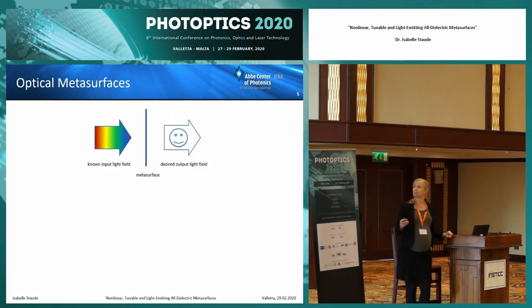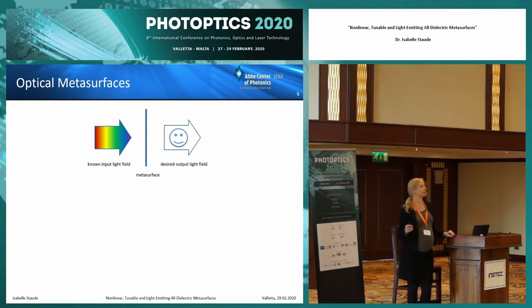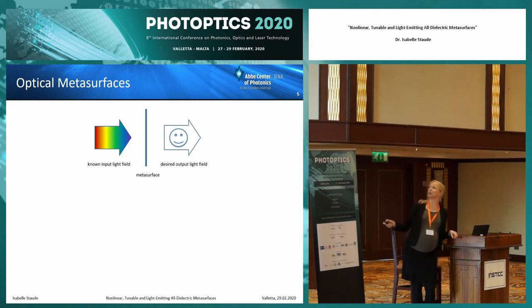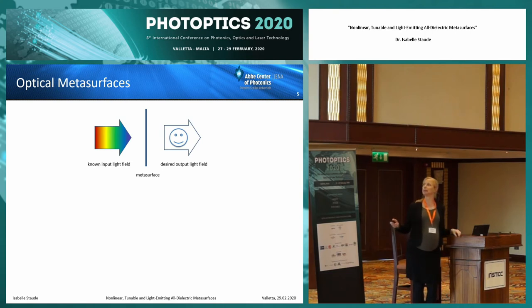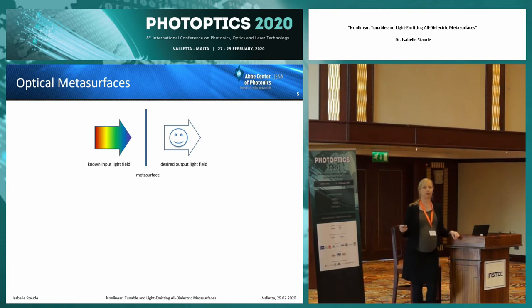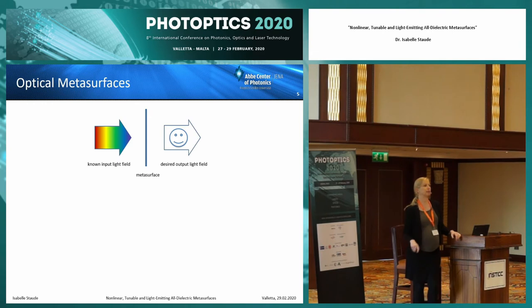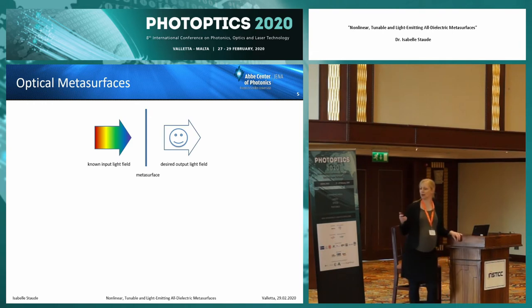Allow me to start by giving you my cartoon picture of what an optical metasurface is. Most of you will know this. What we have is basically a sheet of nanoscale thickness oriented out of the projector plane in this image. We come in with some known input light field, like for instance a plane wave, and the metasurface transforms this into an output light field with desired properties, which can be spectrum, polarization, wavefront, and so on.